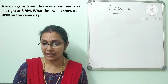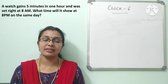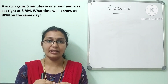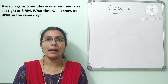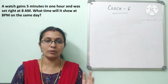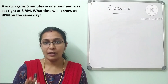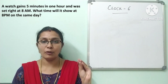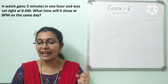A watch gains 5 minutes in one hour and was set right at 8 am. What time will it show at 8 pm on the same day? The gain concept means the watch is running fast. If the time is 6 o'clock, next hour you will have 5 minutes gain. Watch gains 5 minutes in one hour — it takes extra time. It was set right at 8 am, meaning it was correct at 8 am.